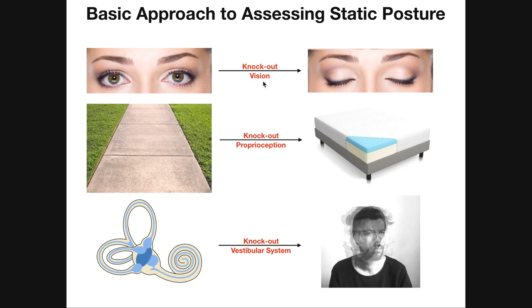All three of these play a role in maintaining balance. Suppose we have an individual who has difficulty maintaining their balance, and one of these three systems is faulty — we need to figure out which one it is. To do that, we first need to understand how to knock out each of these sensations.